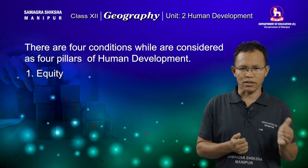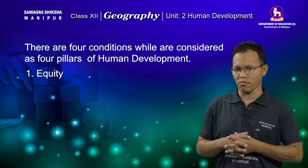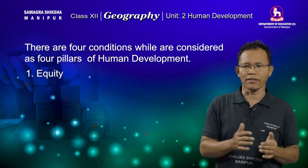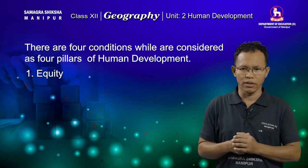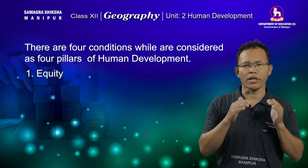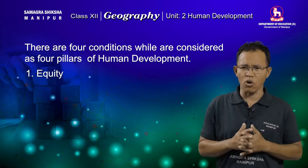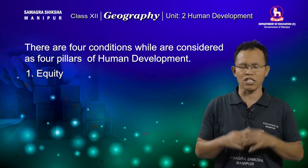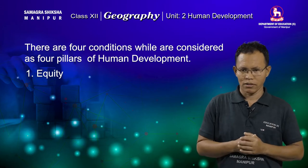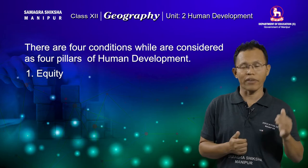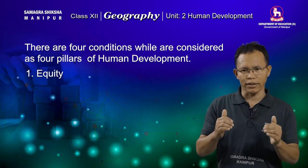The first precondition is equity. The term equity means equal access to opportunities available in the country to all, irrespective of their gender, caste, color, creed, and income. If we want to achieve human development, we need to distribute the facilities or resources available in the country to all people irrespective of their caste, gender, color, and income. But in most cases, poor and economically weak people fail to access such available opportunities, which hampers the development of human populations.